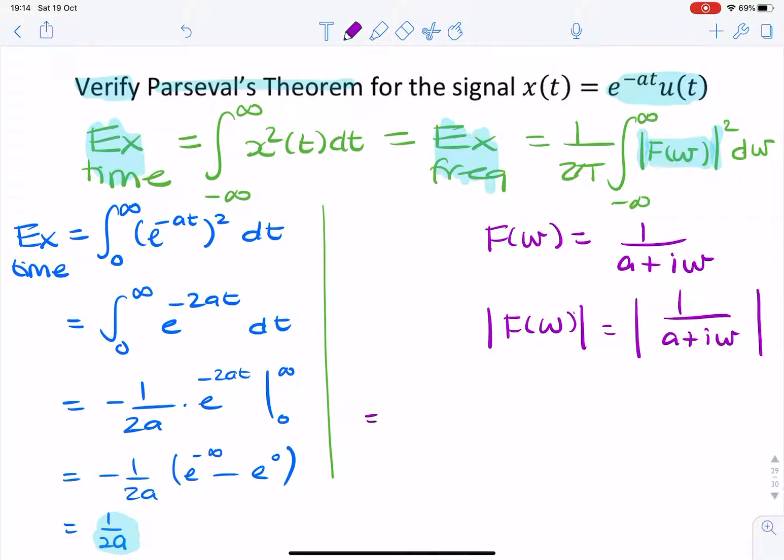What we can do is multiply numerator and denominator by the complex conjugate, a minus i omega.